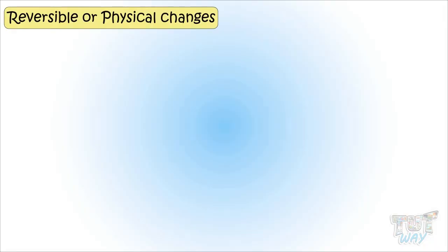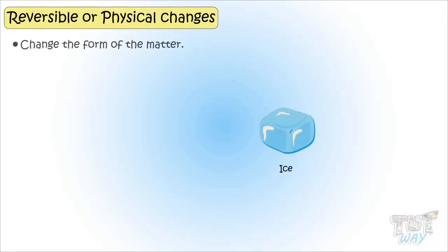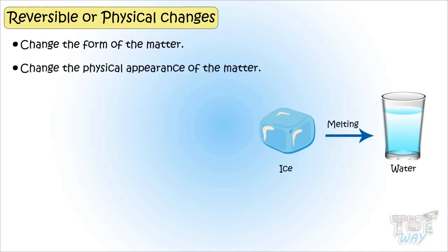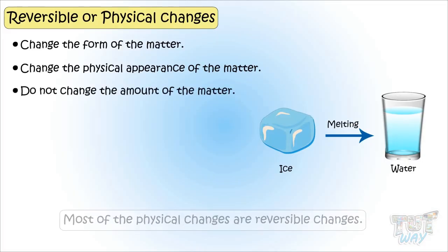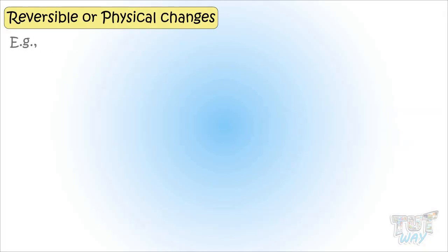Reversible changes or physical changes are the changes that change the form or physical appearance of matter and do not change the amount of matter in an object. Most physical changes are reversible changes. Now let's see some examples of physical changes.